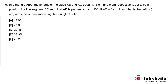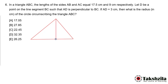Question number 6: In a triangle ABC, the length of sides AB and AC equals 17.5 and 9 cm respectively. Let D be a point on the line segment BC such that AD is perpendicular to BC and AD is equal to 3. Let's draw the diagram — this is triangle ABC with point D. The length of AB is 17.5, AC is 9, and AD is 3.